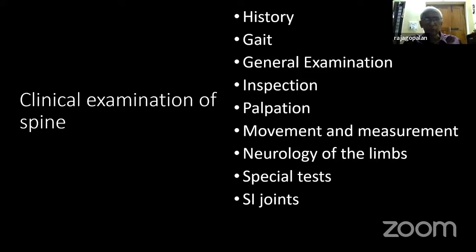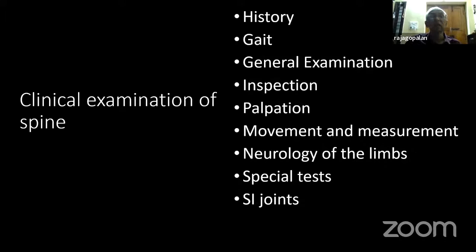The steps of examination are almost similar: a good history, then clinical examination. Examination should start with gait here also — gait is equally important. A general examination is much more important in the spine than inspection, palpation, movements, measurements, neurology, special tests, and sacroiliac joints. And then something else — if it is left out, you sometimes have to go back to general examination.